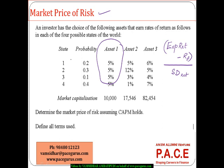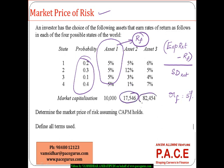If an asset returns 5% in all states of possibility, I can take it as a risk-free asset, meaning its return is the risk-free rate of return. Asset 1 is directly taken as the risk-free asset. The remaining two assets have market capitalizations that determine investment proportions in asset 2 and asset 3, for CAPM to hold true. I'll use a spreadsheet to compute the market price of risk.